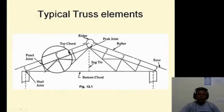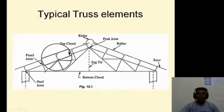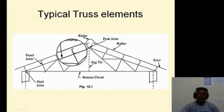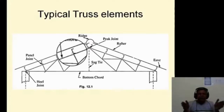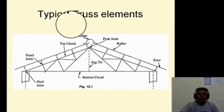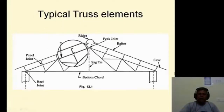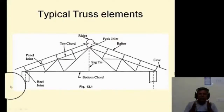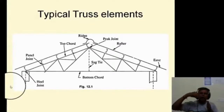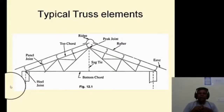Above the panel points, we have purlins. The purlins may be made up of angle sections, channel sections, I-sections, or built-up members, depending upon the spacing between the trusses. The purpose of the purlin is to transfer the load coming from the roof covering material to the truss. This is the basic assumption in the analysis of the truss.